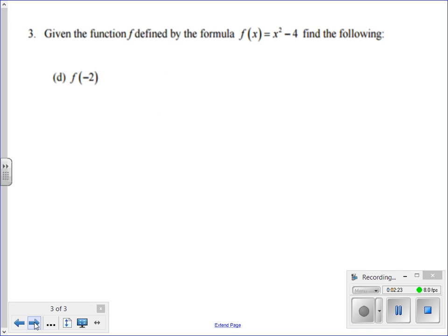Alright, the third and last problem I'm going to do for you here is 3d. Now in 3, I'm given a function f(x) equals x squared minus 4. What I have to do is find f(negative 2).